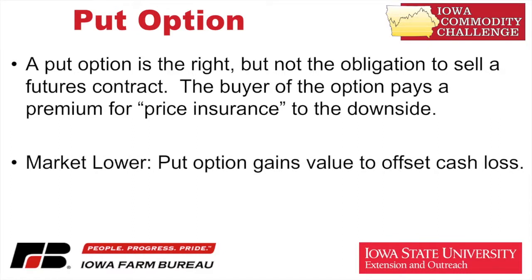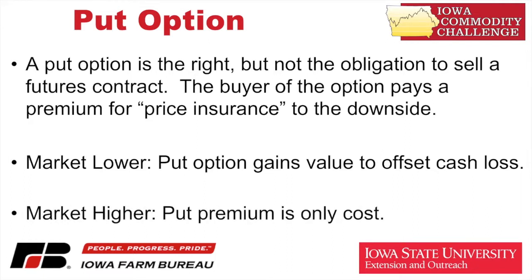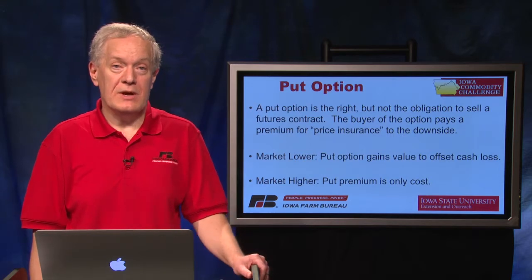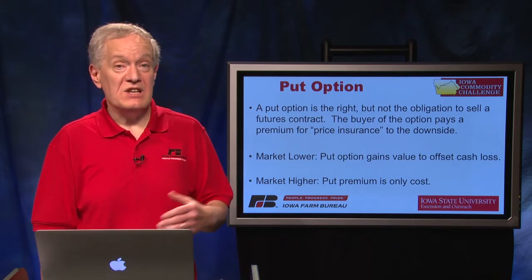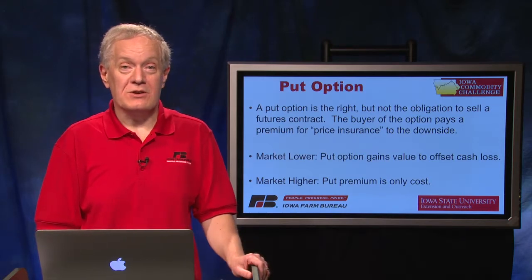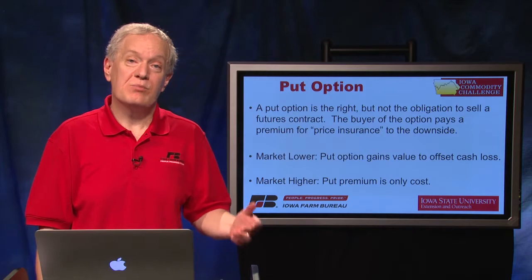If the market goes lower, the put option is actually going to gain value to offset the cash loss — maybe not one for one, but it's there to protect against that cash price going lower. But if the market goes higher, the only cost is that option premium that you pay. Think about options as price insurance and relate it to other parts of your life. You pay a premium, it's gone, but you do have the protection — in this case, protection against prices going lower.